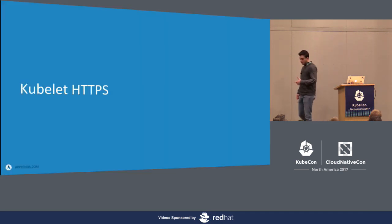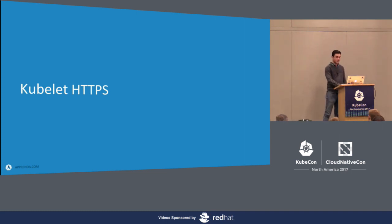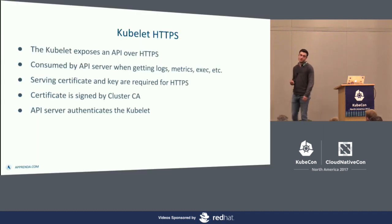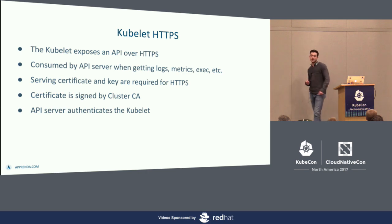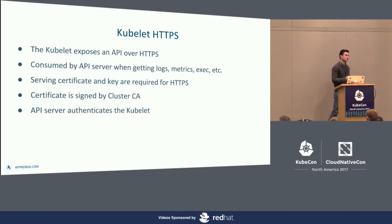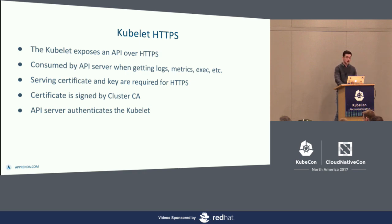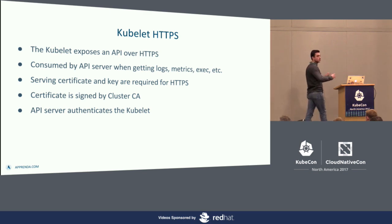There's actually another API — really an internal private API as of now — and that is the kubelet API, which you also want to expose over HTTPS. To do this, we need a serving certificate and the corresponding key. This API is mainly consumed by the API server when it needs to get logs, get metrics from a specific container, or exec into a pod. Again, this cert is signed by the cluster CA, which is how the API server can authenticate the kubelet and make sure it's talking to the right kubelet.